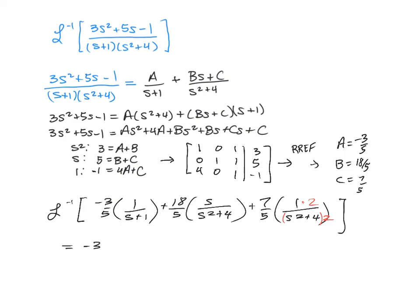So when we take the inverse of this, we're going to have negative 3 fifths e to the negative t, plus 18 fifths cosine of 2t, plus 7 over 10 sine of 2t.